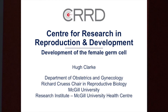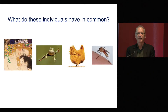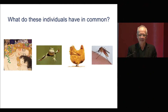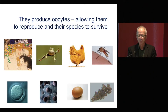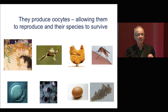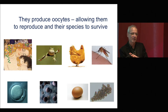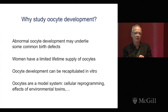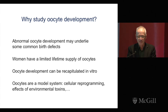Good afternoon, my name is Hugh Clark and I'm going to begin by asking a question. What do these individuals have in common? What these individuals share is that they all produce oocytes, and this allows them to reproduce and allows their species to survive. This is the focus of the research in my lab: how are oocytes produced?